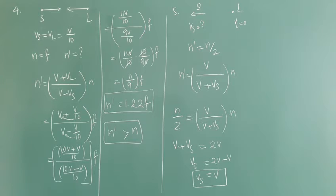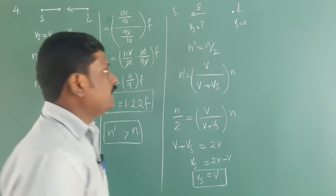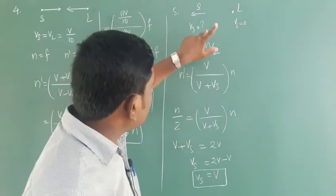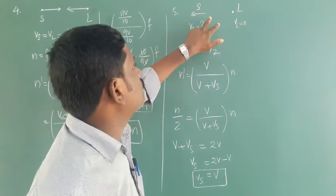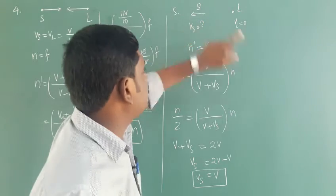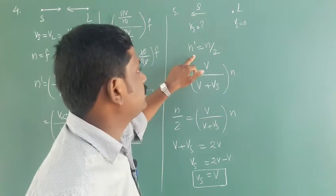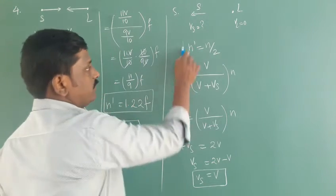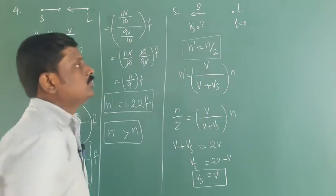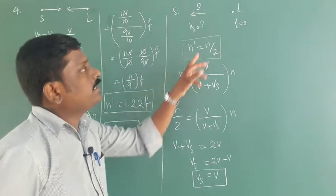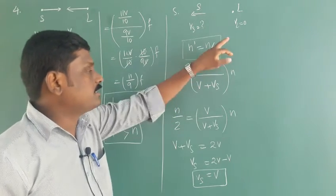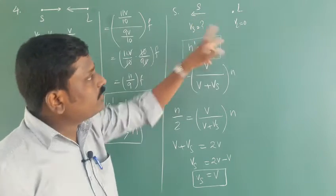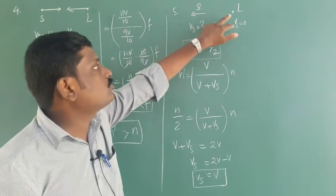So there is a Doppler effect here. Now for problem two: the listener is at rest. At what velocity does the source move away from the listener when the frequency heard by the listener is half of the frequency created by the source? So N dash is equal to N by 2 — the apparent frequency is half of the original frequency.